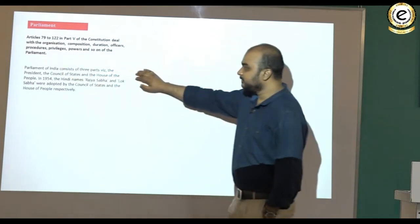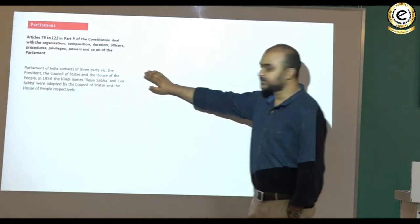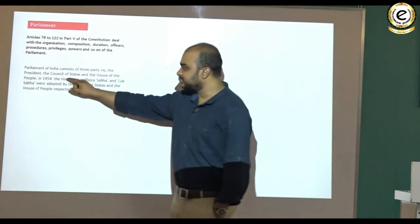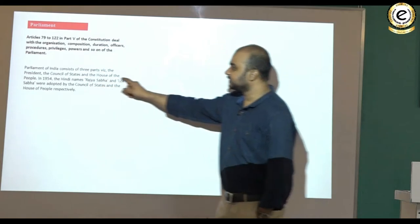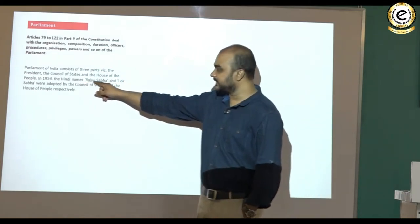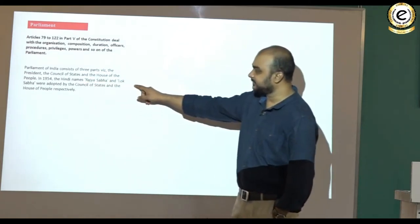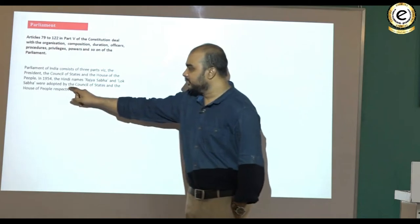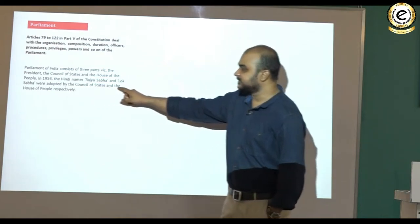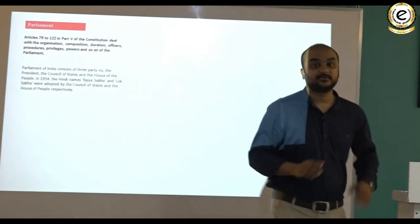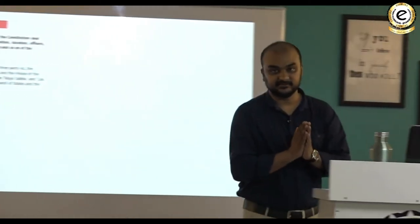The parliament of India consists of three parts: the president, the council of states, and the house of the people. In 1954, the Hindi names Rajya Sabha and Lok Sabha were adopted by the council of states and the house of the people respectively.